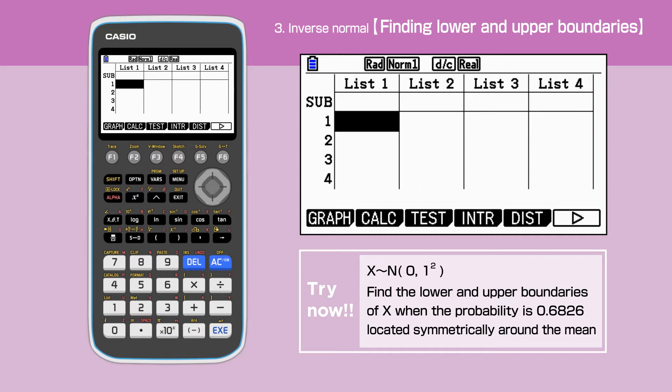Find the lower and upper boundaries of X when the probability is 0.6826 located symmetrically around the mean. Press F5 to select distribution.